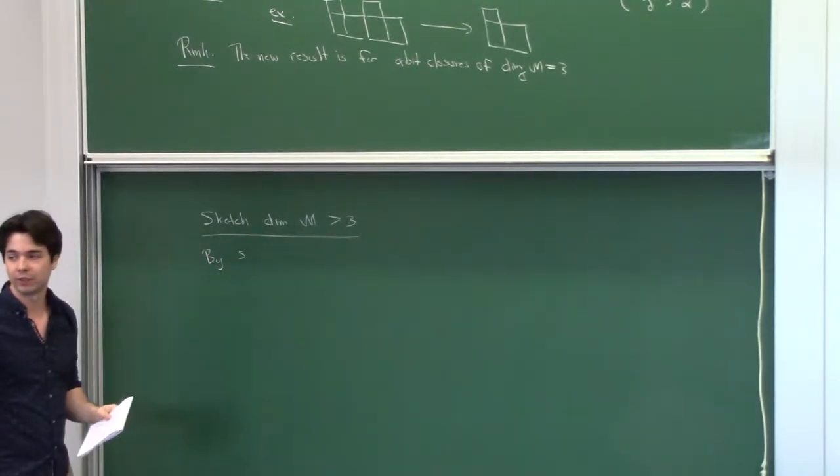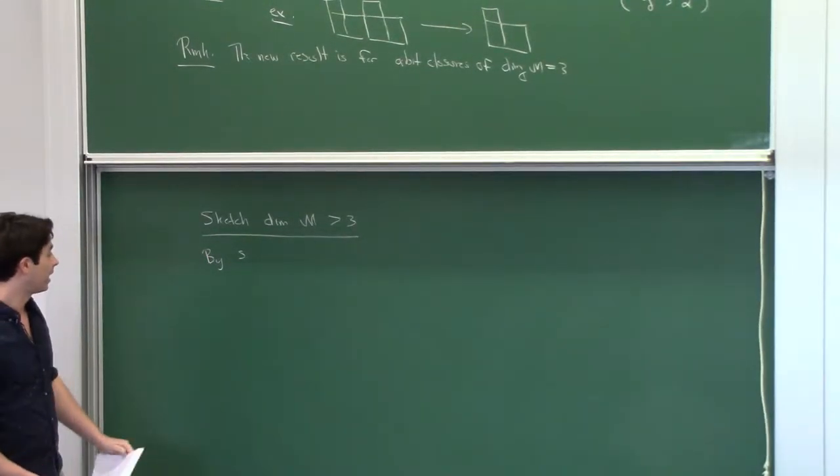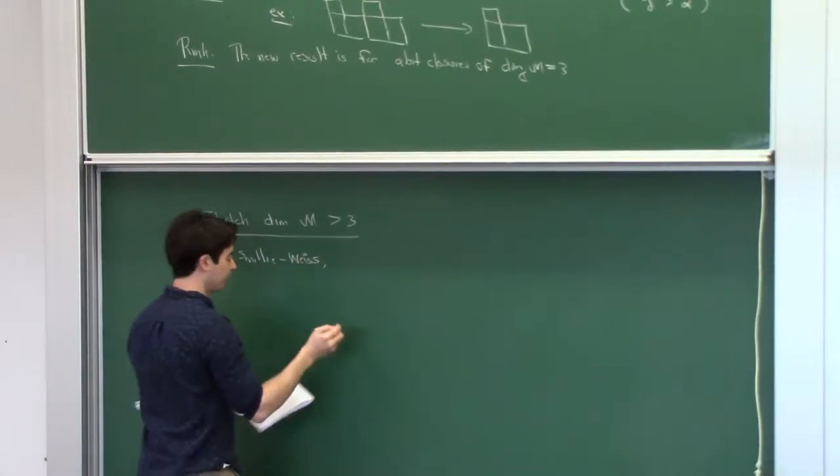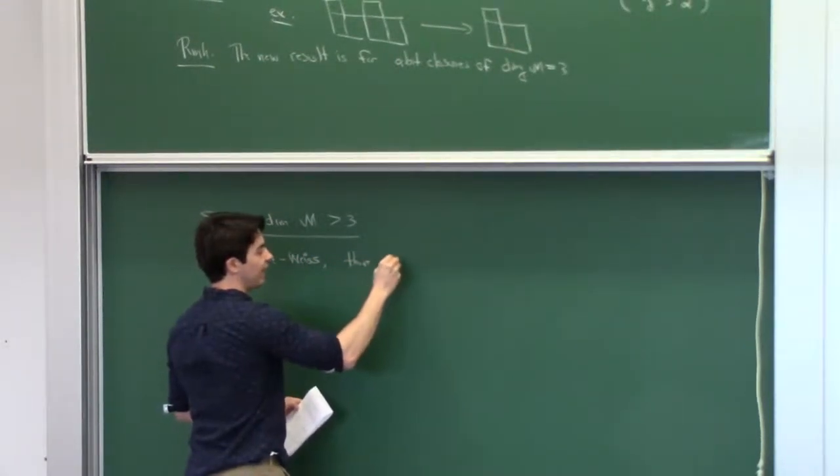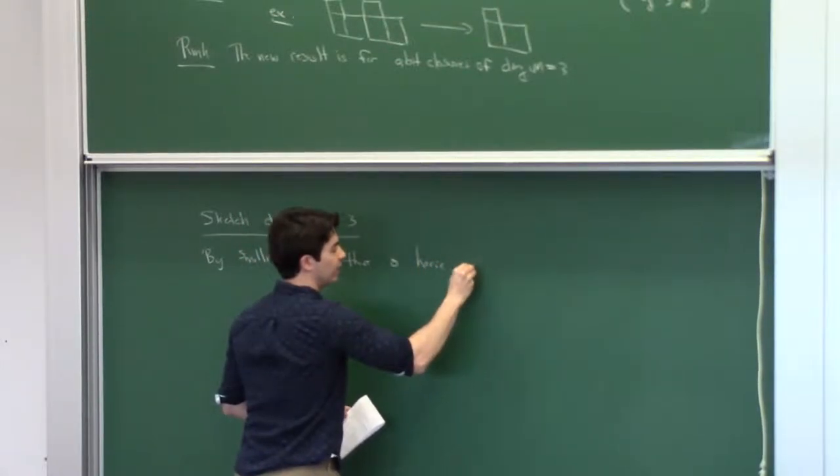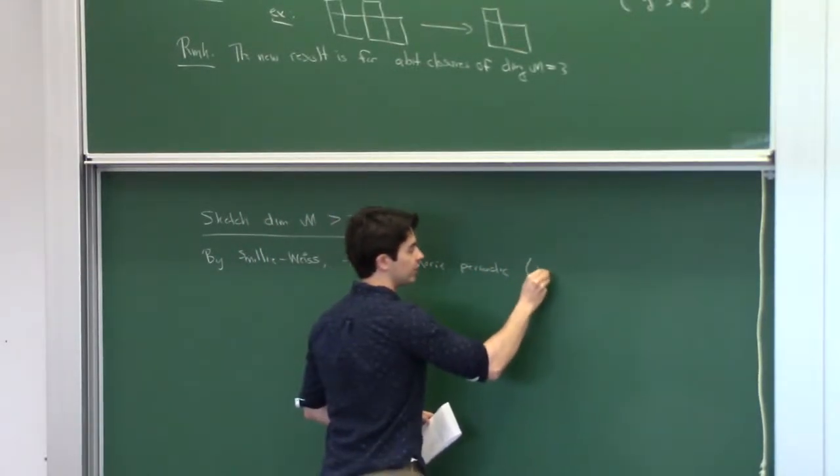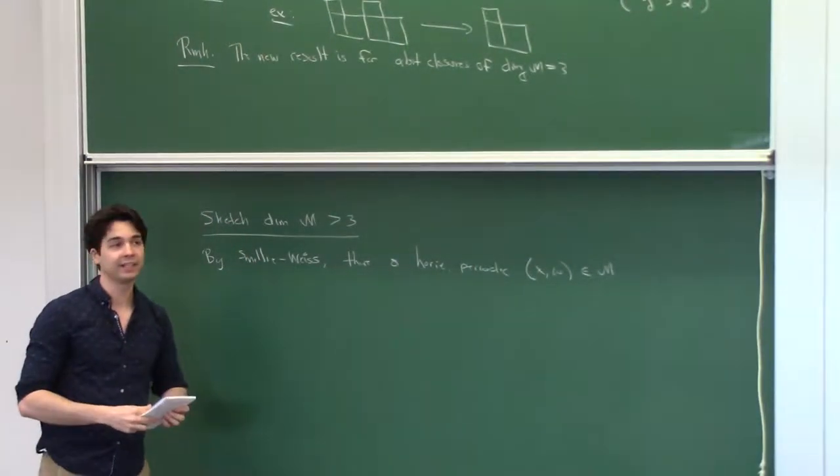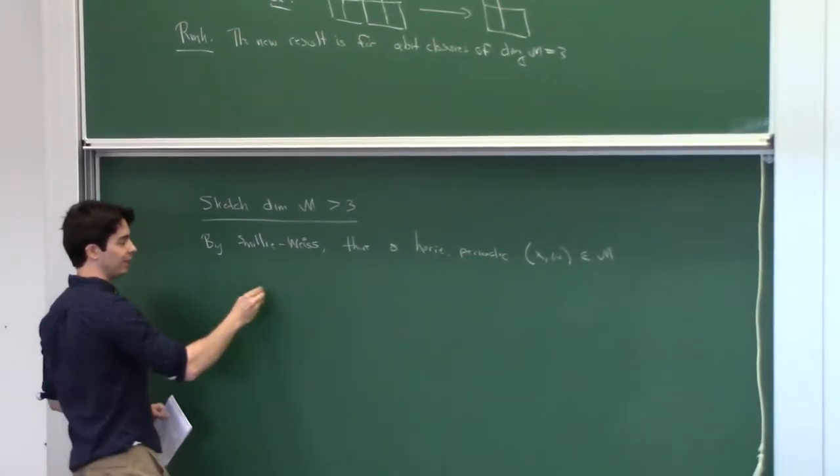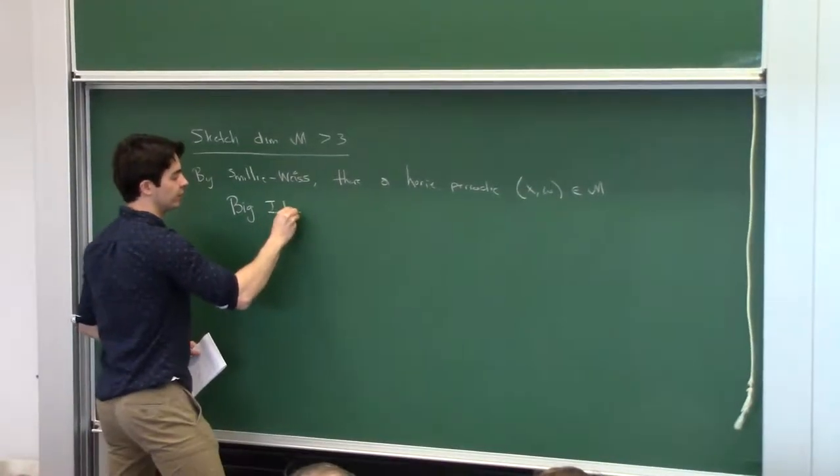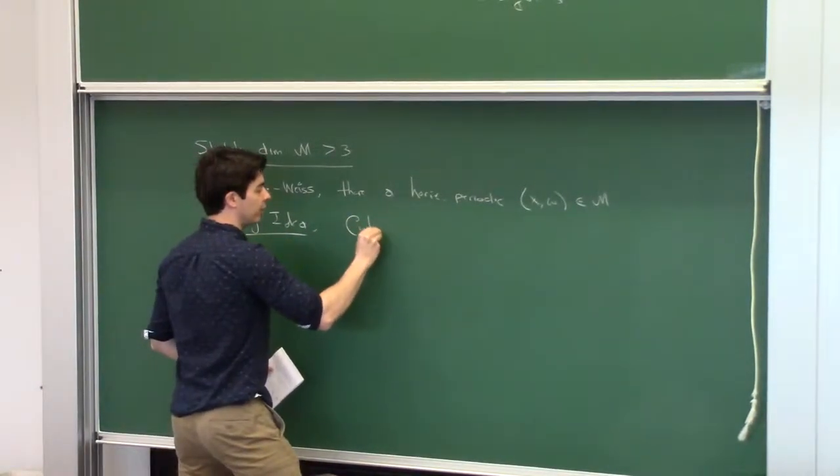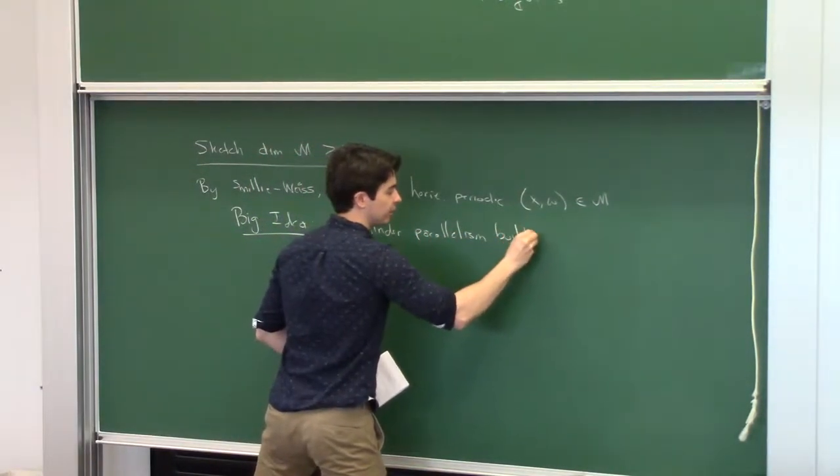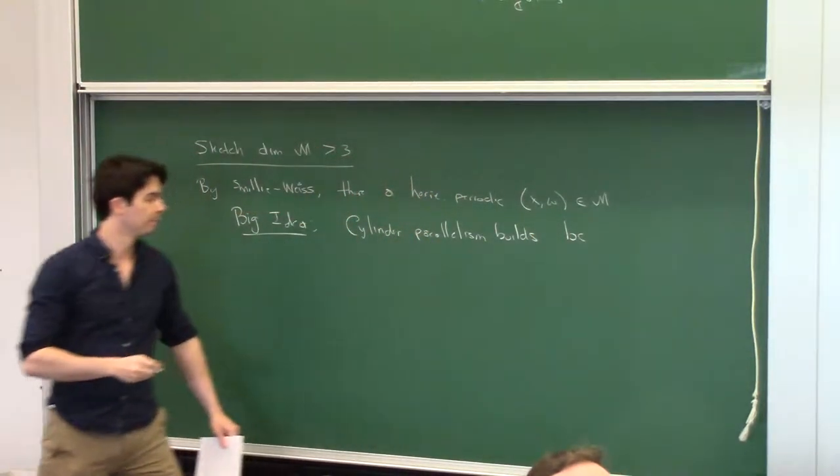Okay. Right. So what's the sketch when you have your dimension bigger than 3? So first, by Smillie and Weiss, who studied horocycle flow, we can find, let's say, a horizontally periodic translation surface in our orbit closure. And now here's the big idea.